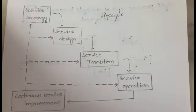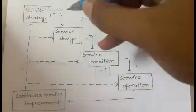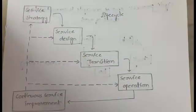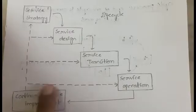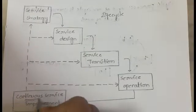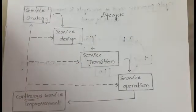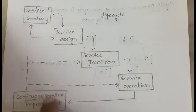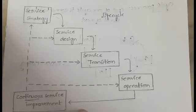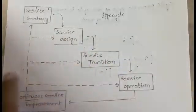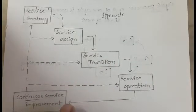This is the diagrammatic representation of the life cycle of the cloud service — service strategy, service design, service transition, service operation, and continuous service improvement. Continuous service improvement is connected to each and every phase because it is a continuous process. The service has to be improved continuously at any stage, whether in the strategy, design, transition, or operation stage. That is why continuous improvement is connected to every phase.